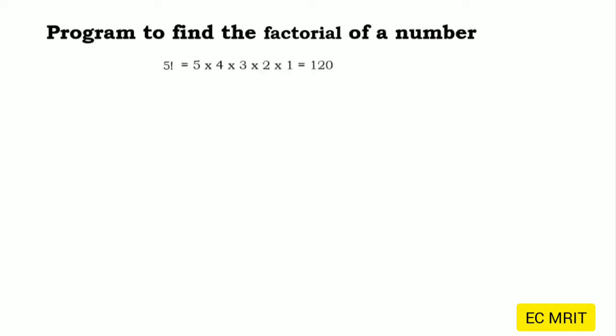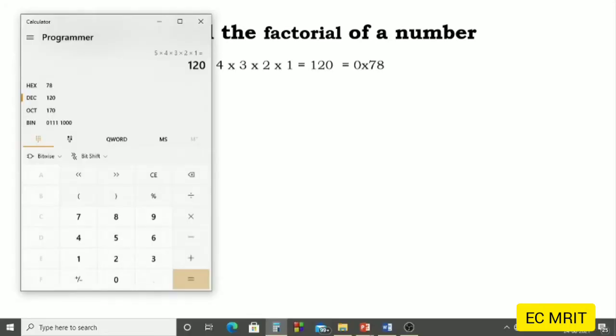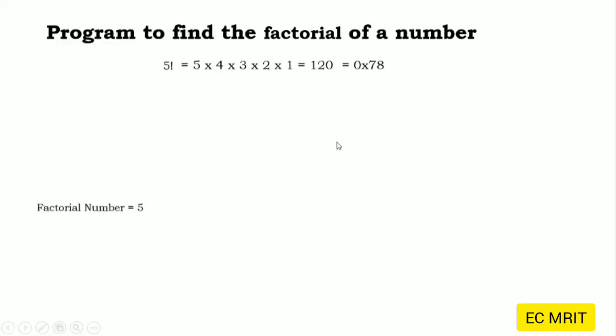In this program we are going to find the factorial of a number. For example, taking the number 5: the factorial is 5×4×3×2×1, which equals 120. This is equivalent to 0x78 in hexadecimal. We can verify in our calculator that 5×4×3×2×1 is 120 in decimal, which is equivalent to 0x78 in hexadecimal. To write this program, first we need to define a register to hold this number.